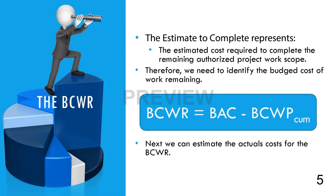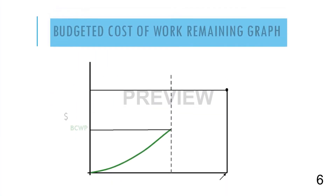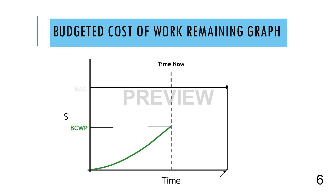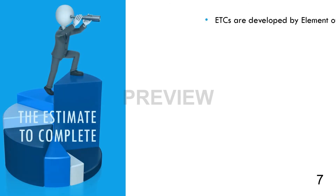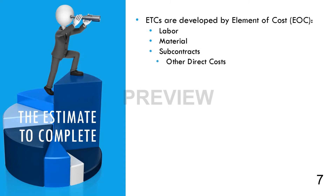We can focus on the actual costs required to complete the BCWR. Shown graphically, we can see the relationship between the budget at completion, or BAC, and the budgeted cost of work performed, or BCWP. The difference between these two elements is the budgeted cost of work remaining, or BCWR. The estimate to complete the remaining work scope is developed at the element of cost level — meaning labor, material, subcontracts, other direct costs, etc.